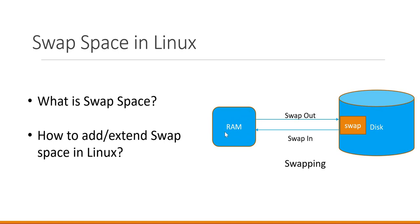In that case it will remove some of the inactive pages of the applications and load those pages from the RAM to a particular place in the disk called swap space. This process of moving inactive pages from RAM into swap is called swap out. After some time, if other processes complete and enough RAM memory is available, it will reload those pages from swap space back to RAM — this is called swap in. So swapping involves both swap out as well as swap in.